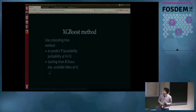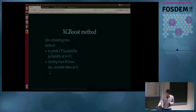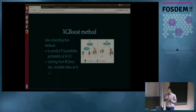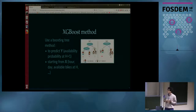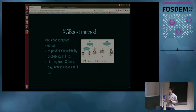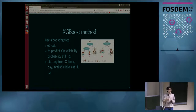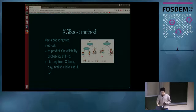We use the method called XGBoost. Without going into the detail, XGBoost is a decision tree method using gradient boosting. The y we want to predict is the availability probability of finding a bike at the next hour. The x variables are the hour of the day, the day of the week — is it Monday, Tuesday, and so on — and the number of available bikes at the current hour.